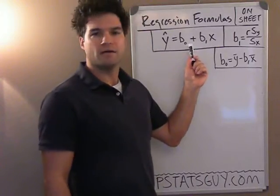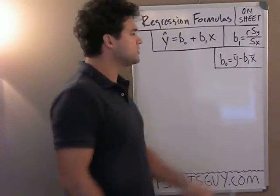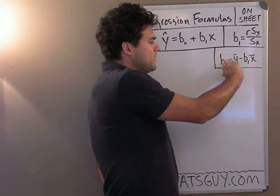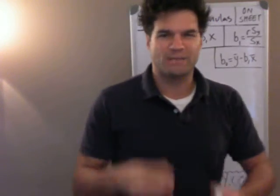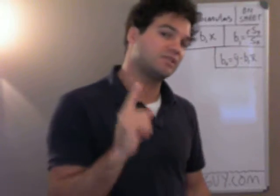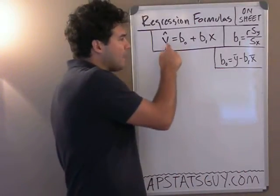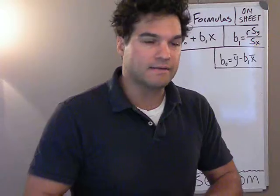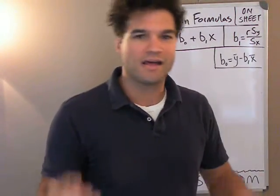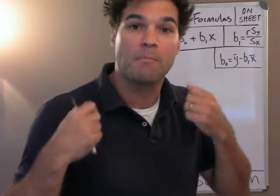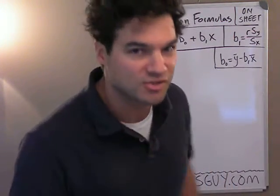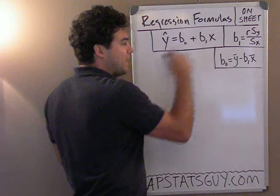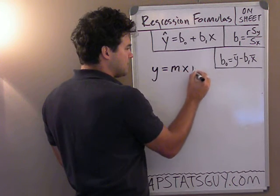This is the big model — this is the form that all your models will be in, which is kind of like the old y equals mx plus b. Here's your formula for slope, and here's your formula for getting the y-intercept. I'm going to show you where those things come from. This first formula is simply derived from our old friend y equals mx plus b.